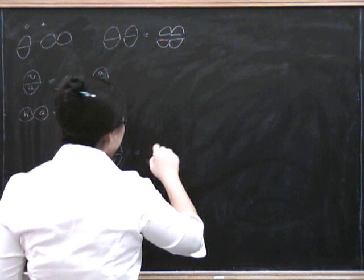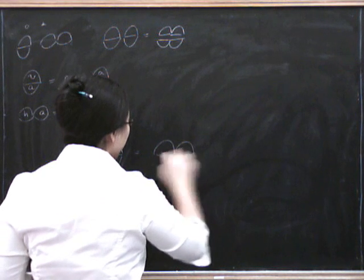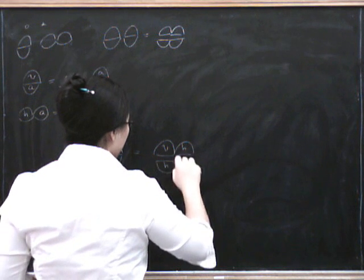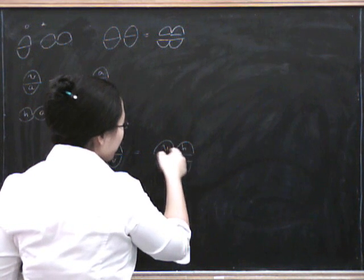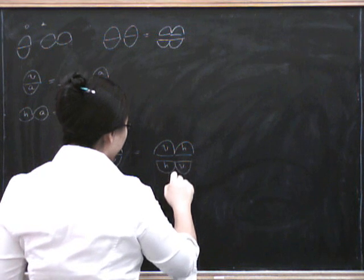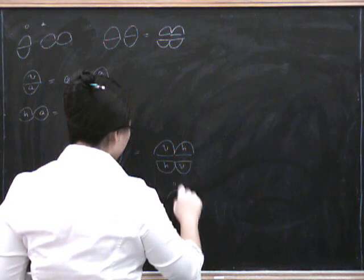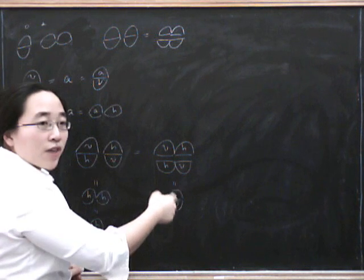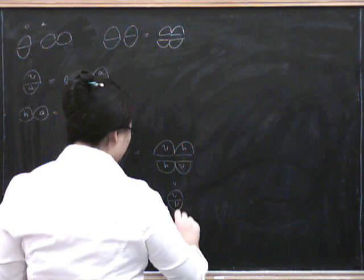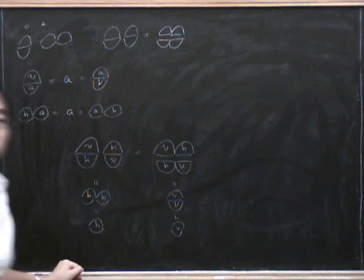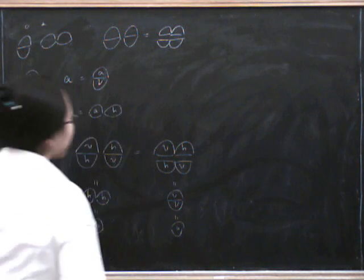But if we use the interchange law here, we do this the other way. Now V horizontally composed with H - well H acts as the unit here, so we get V at the top and V at the bottom. Vertically composing vertical units gives us V. So we have H equals V, showing the two units are the same.